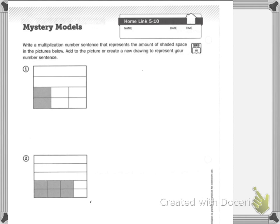Today we worked with the area model to solve some multiplication problems. In your homework it says, write a multiplication number sentence that represents the amount of shaded space in the picture below. Add to the picture or create a new drawing to represent the number sentence.